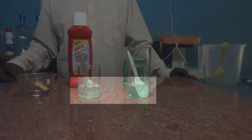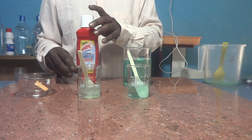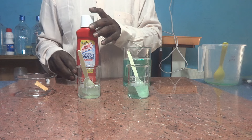If we want to reduce the color, we can reduce it. We have to choose a very prominent stain in our bathroom. For half of the stain, we use Harpic disinfectant bathroom cleaner, and for the remaining half, we use our bathroom cleaner. This type of comparison will give a better and more justified idea about our product.